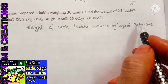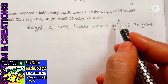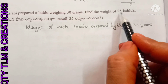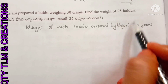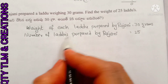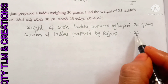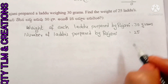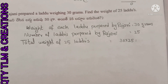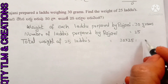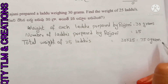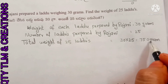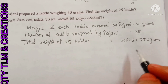Next question: number of laddoos prepared by Rajani equals 25. Total weight of 25 laddoos equals 30 grams × 25. We multiply: total weight of 25 laddoos is 750 grams.